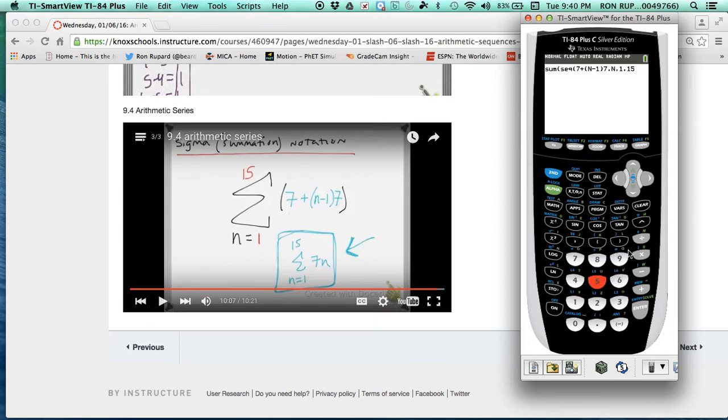And that's really it. Then you just double close your parentheses. So parentheses, parentheses, and hit enter. The sum of this should be 840.